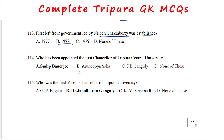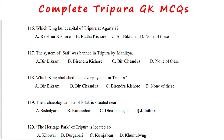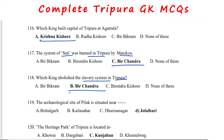The first chancellor of Tripura Central University was Sudip Banerjee. The first Vice Chancellor of Tripura University was Dr. Jaladhar Ganguly. The capital of Tripura at Agartala was built by Krishnakishor Manika. The system of Sati was banned in Tripura by Maharaja Virchandra Manika. Maharaja Virchandra Manika also abolished the slavery system in Tripura.